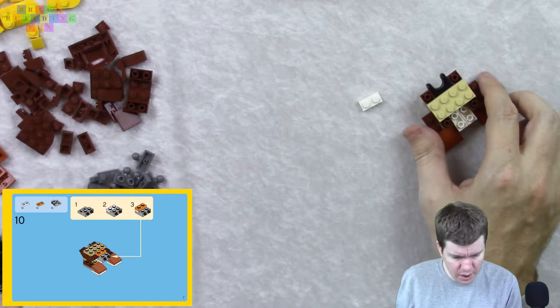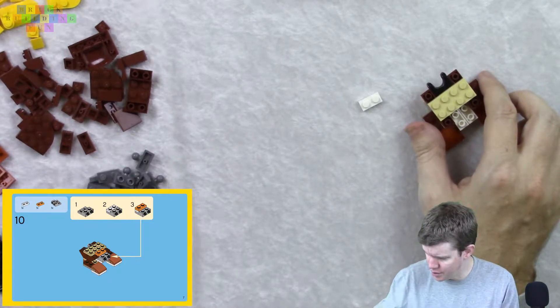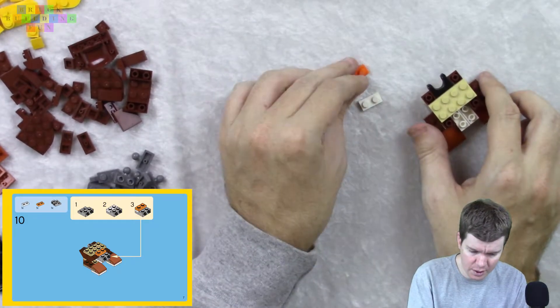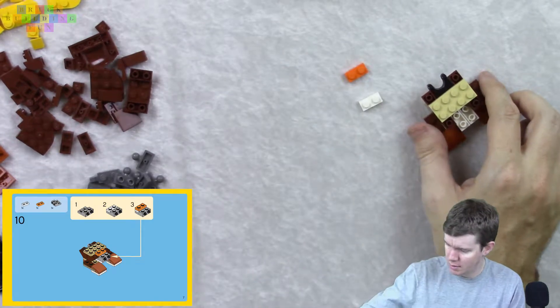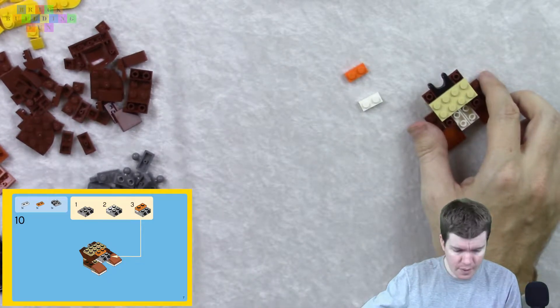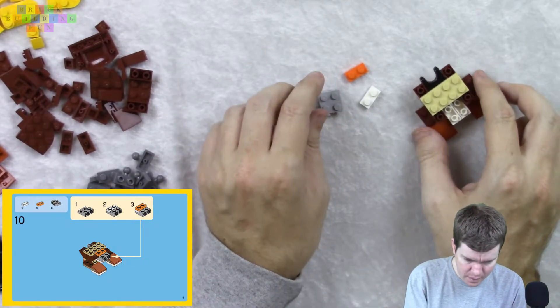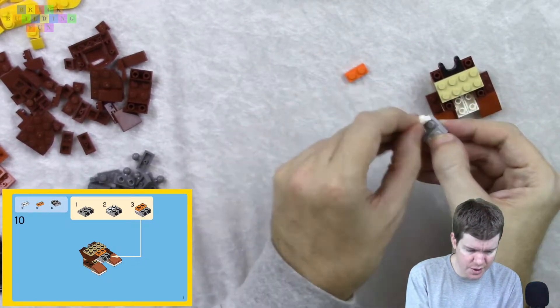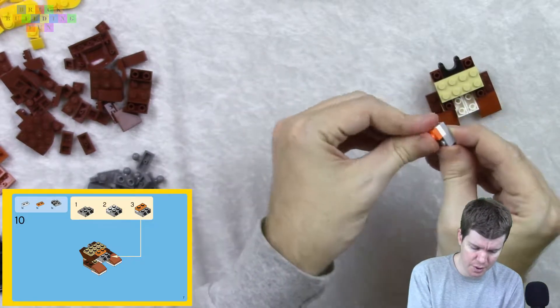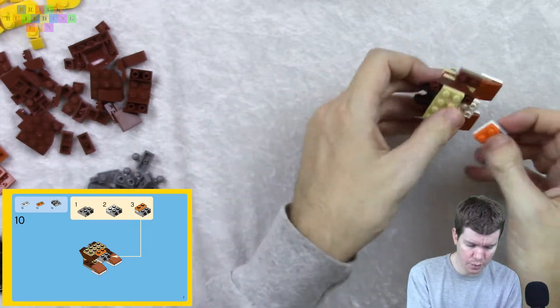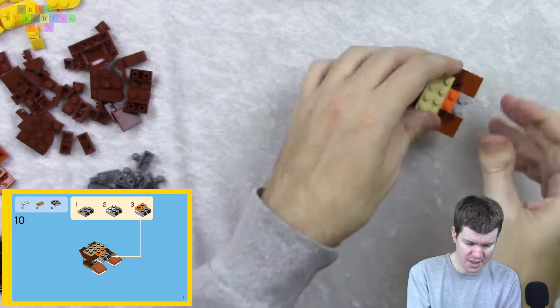We need a one by two, is it an orange? Yeah, it's an orange. It's a little hard to tell colors on this, but maybe that's my eyes. I hadn't really considered that too much before. Someone who is colorblind would have a hard time putting these sets together.